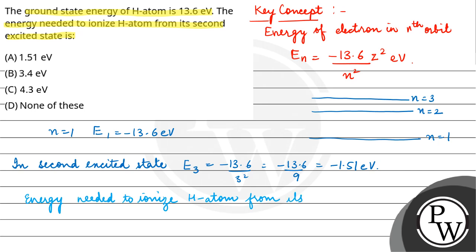...from its second excited state, which means n equals 3, that will be 1.51 electron volt. So our final answer is option A, 1.51 electron volt.